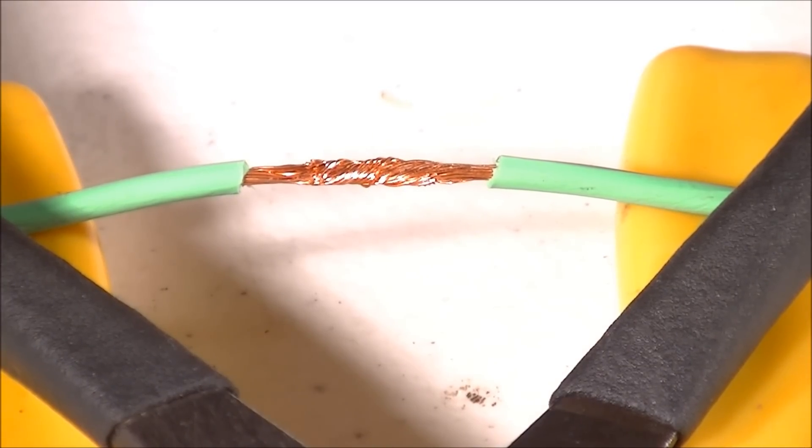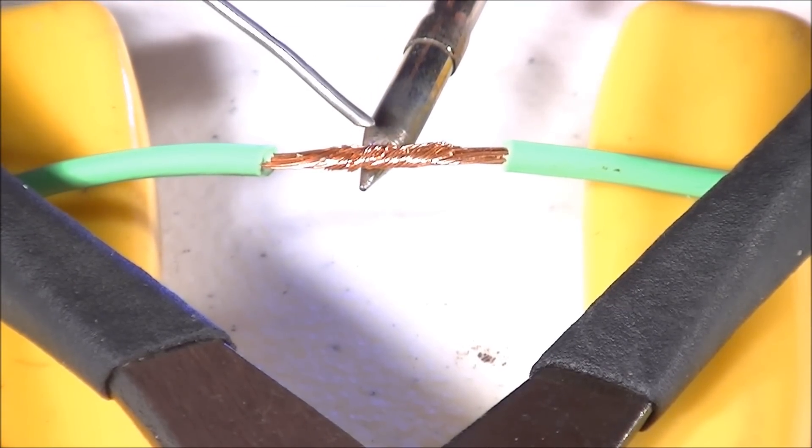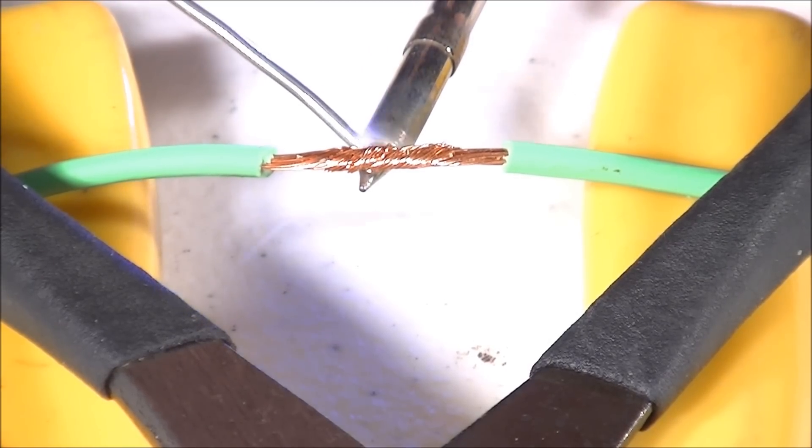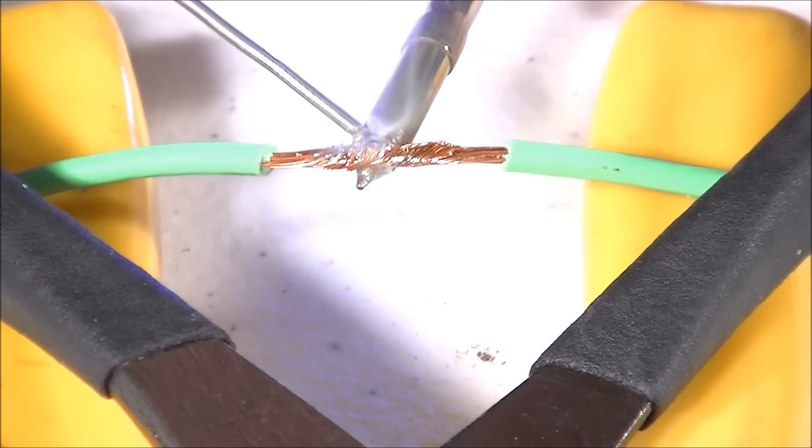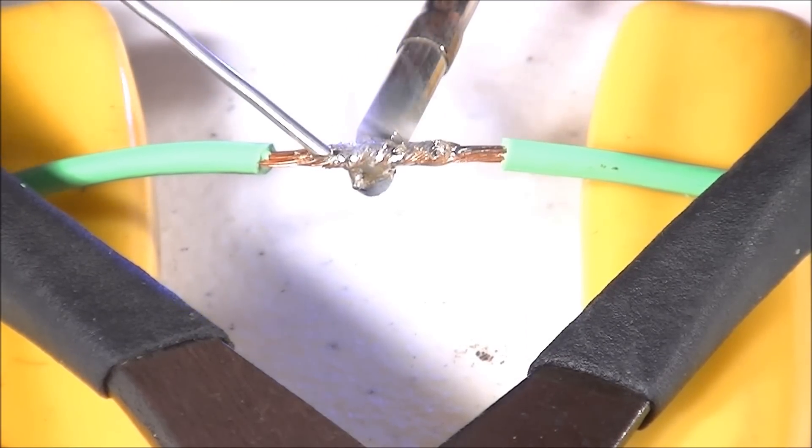Once you begin this process it happens in seconds. Begin by touching the solder to the initial point of contact and let the wire absorb the molten solder.